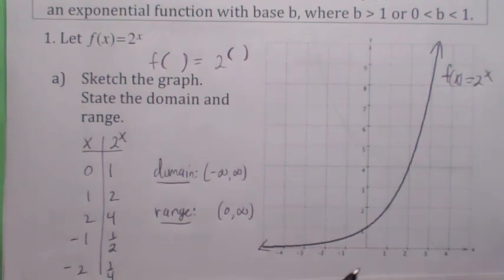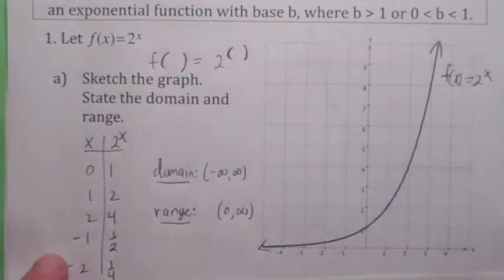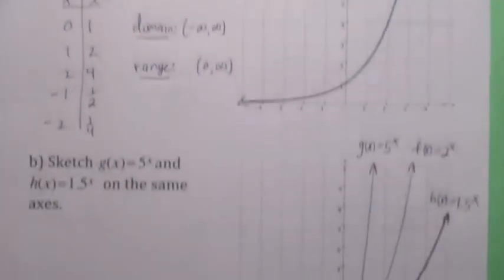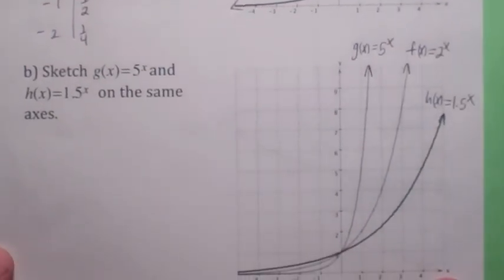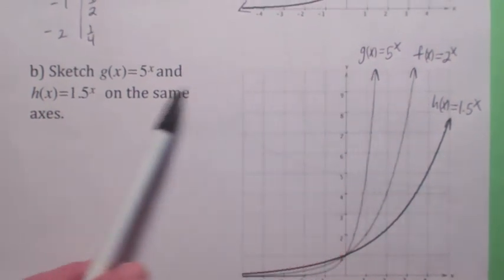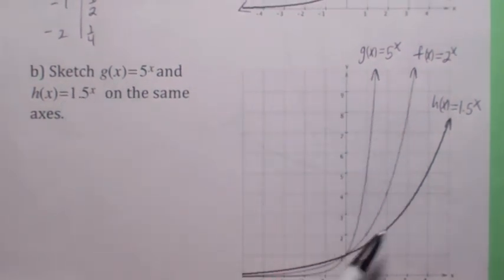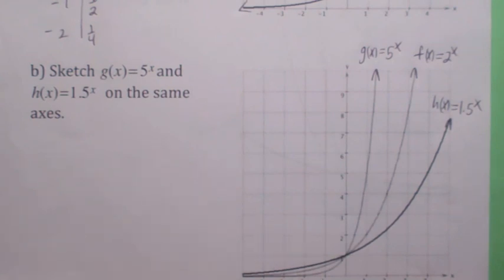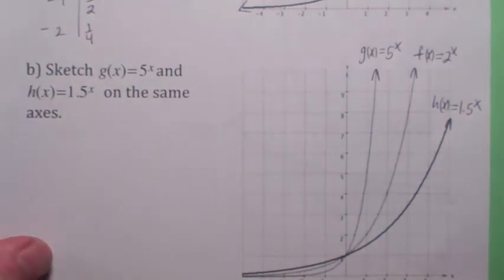What else do you notice about this function? It goes through (0, 1) and it's increasing, and it's 1-to-1. So it has an inverse function. It turns out, as long as the base is greater than 1, they all have the same basic shape. Notice 5 to the x is a little bit steeper than 2 to the x, and 1.5 to the x isn't quite as steep as 2 to the x, but they all have the same basic shape. They all have domain negative infinity to infinity, range 0 to infinity, they're 1-to-1 and they're increasing.